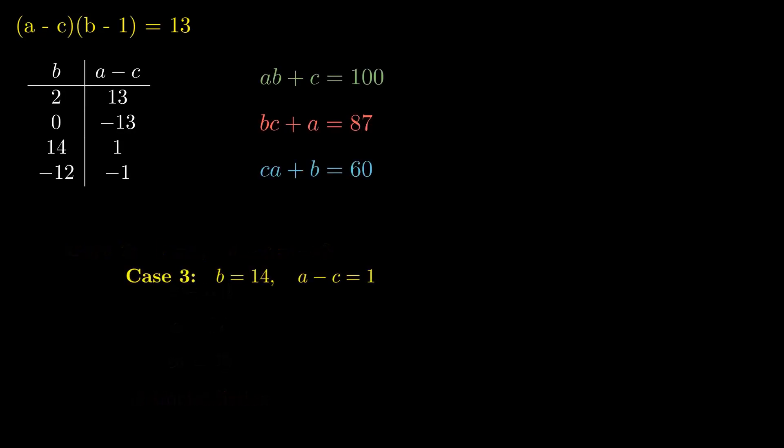Now let's check case 3. If B is 14 and A minus C is 1, we plug these in. And guess what? A isn't an integer. So we throw this case out too. Now for case 4, our last hope,